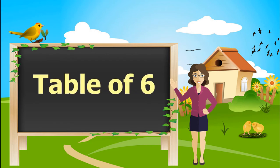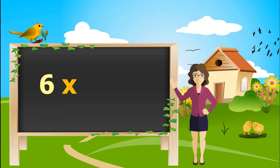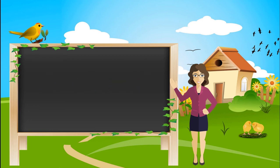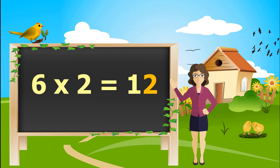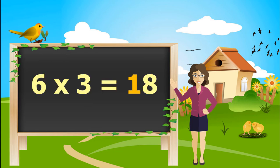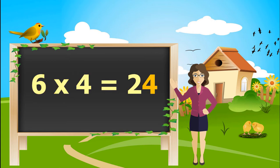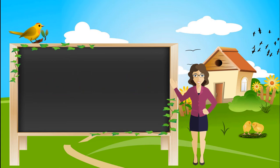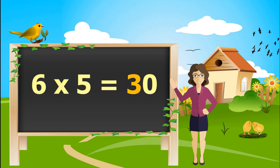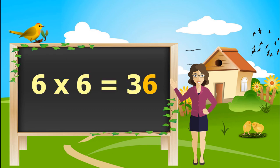Let's learn table of 6. 6 ones is 6. 6 twos are 12. 6 threes are 18. 6 fours are 24. 6 fives are 30.